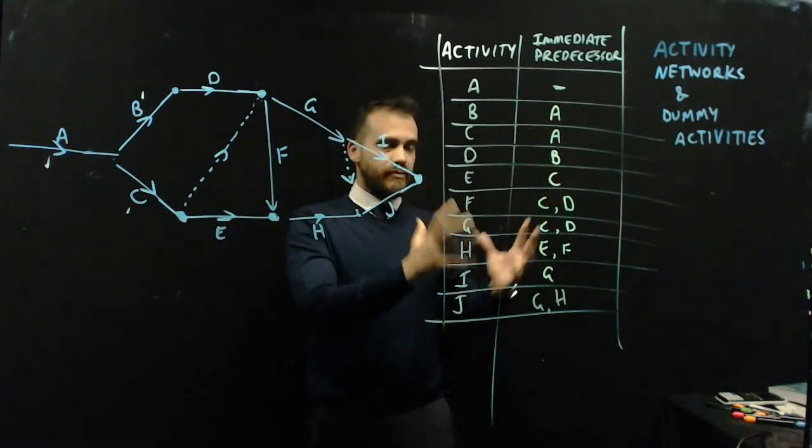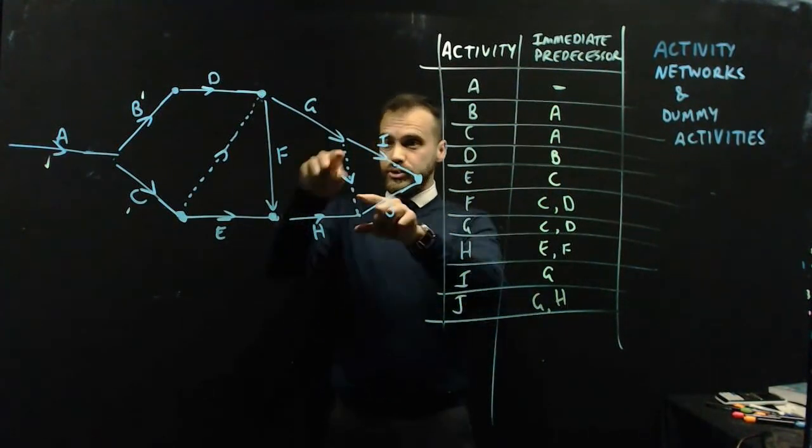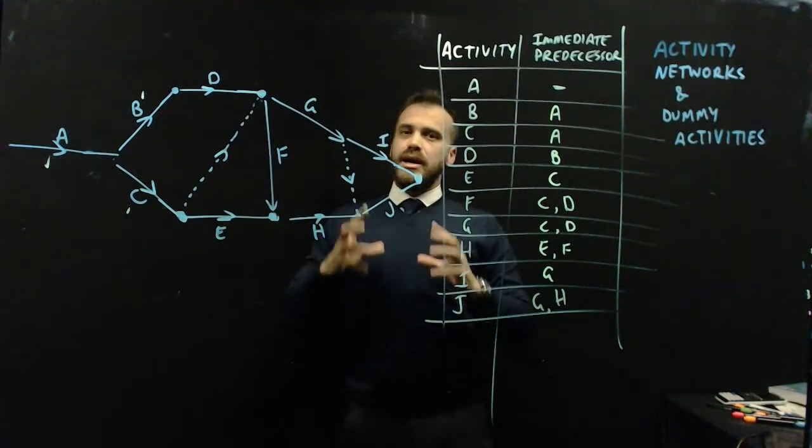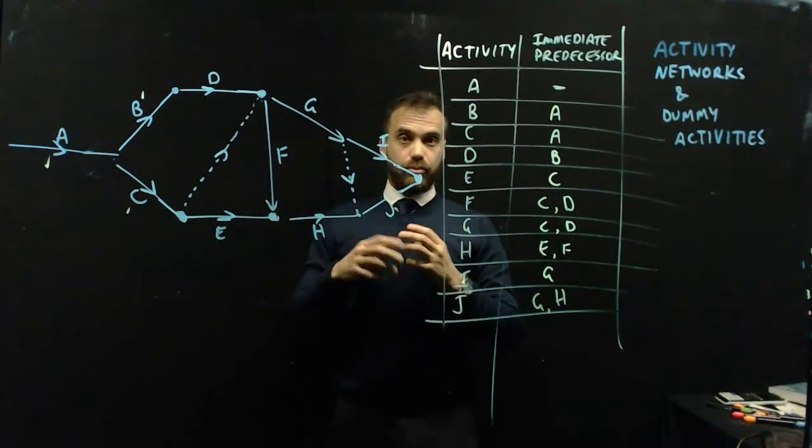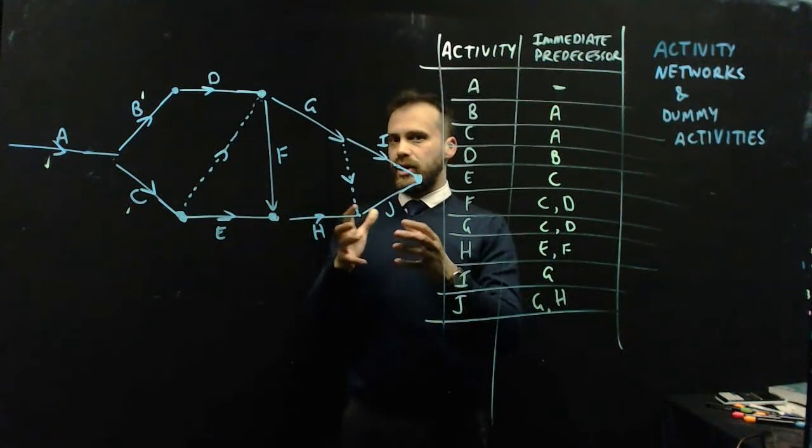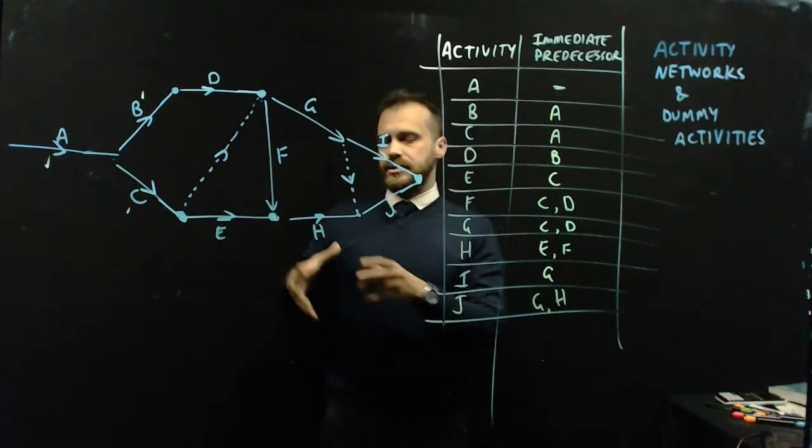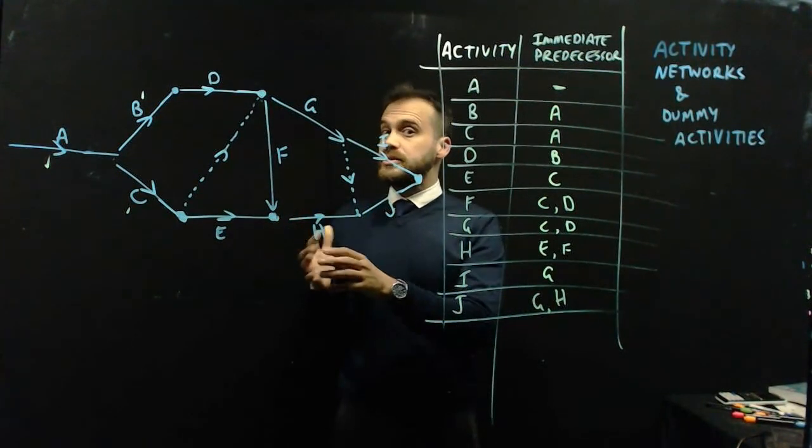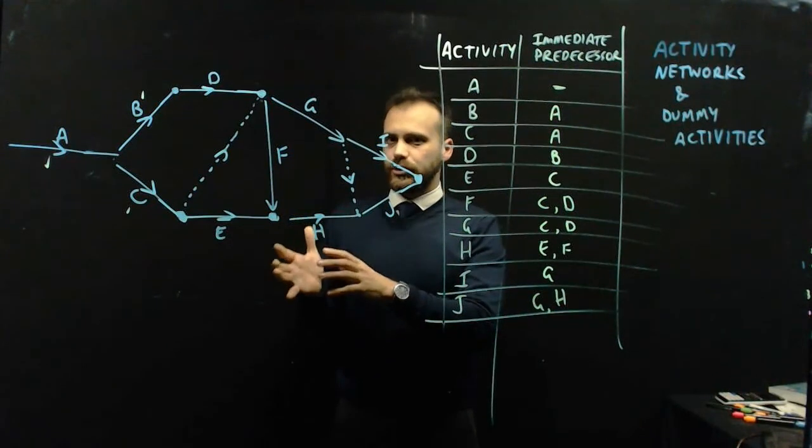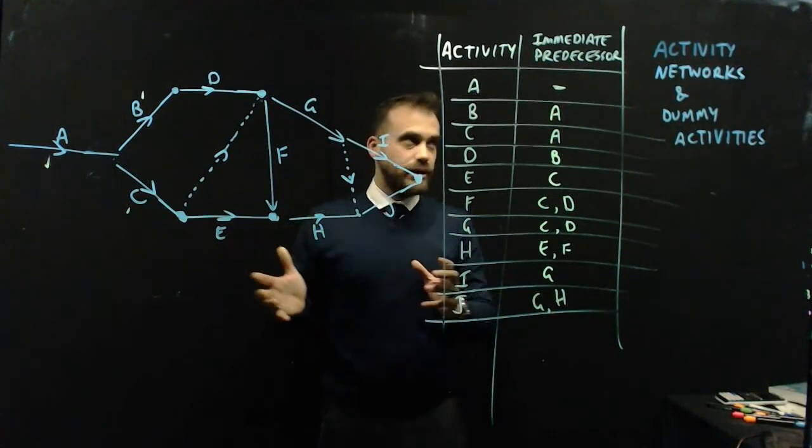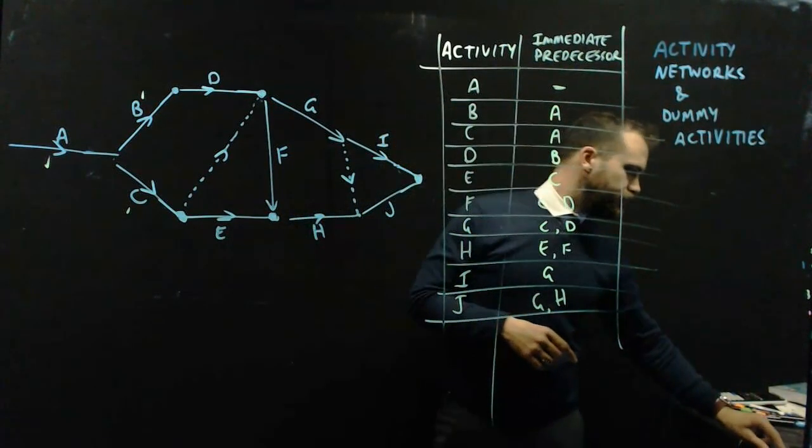Those are activity networks. Those are dummy activities. And we use them when the problem is that an activity has some immediate predecessors in common but not all immediate predecessors in common. Done.